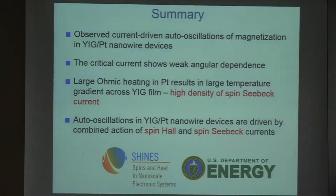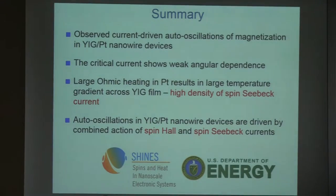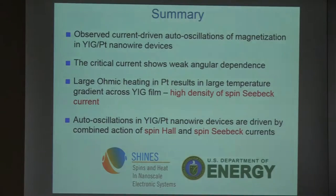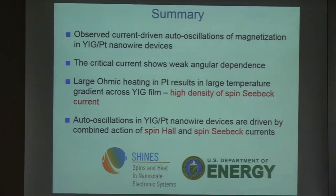In conclusion: we observed current-driven auto-oscillations of magnetization in YIG/platinum nanowire devices. We observed very weak critical current dependence on the angle of magnetization, which is very unusual for any spin torque oscillator studied before. In this device geometry, you have very high heating and large temperature gradients, generating a large density of spin Seebeck current. We conclude that auto-oscillations are excited by a combination of spin Hall and spin Seebeck current, and for very small angles of magnetization it is mainly the spin Seebeck current that drives the system into self-oscillations.